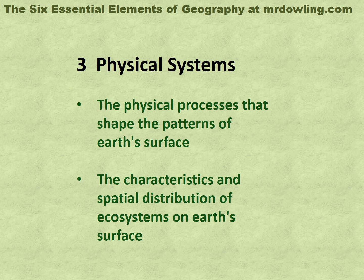Physical systems: the physical processes that shape the patterns of Earth's surface, and the characteristics and spatial distribution of ecosystems on Earth's surface.